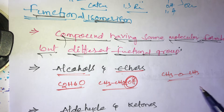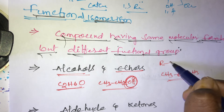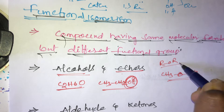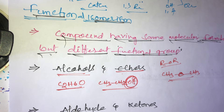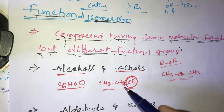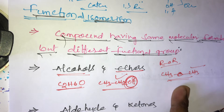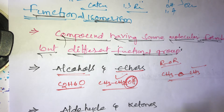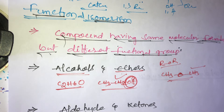For ethers, we can write CH3OCH3. The ether functional group is ROR. The molecular formula is the same — C2H6O — so alcohols and ethers are functional isomers of each other.